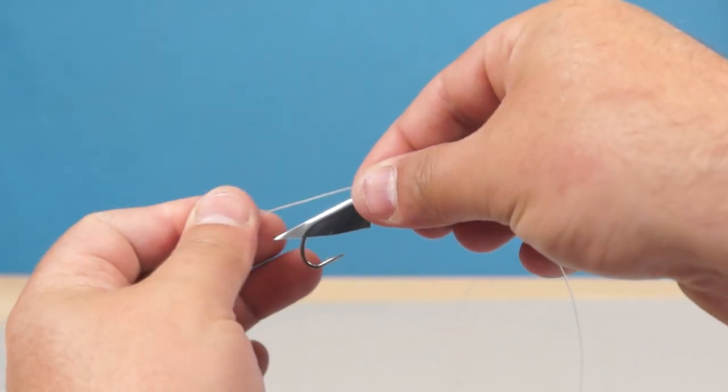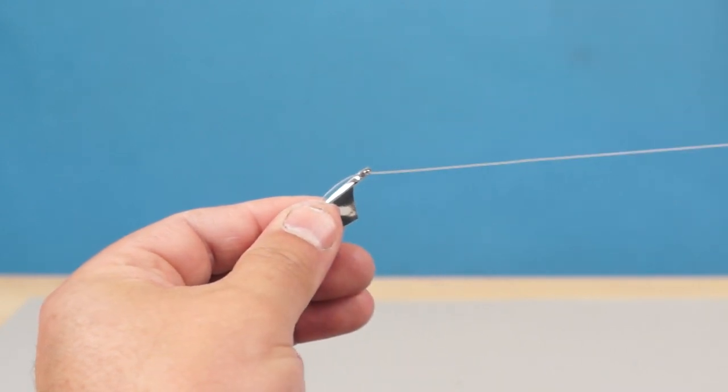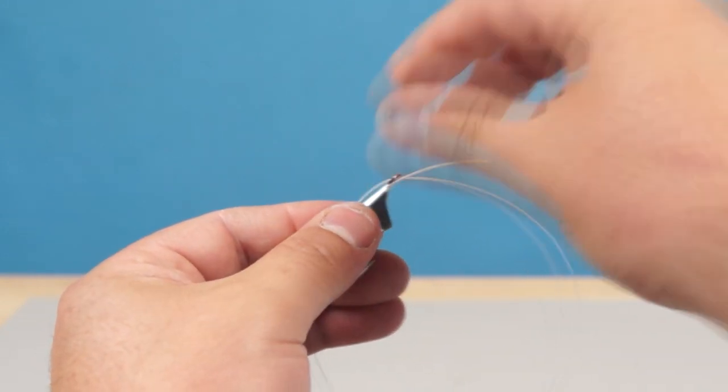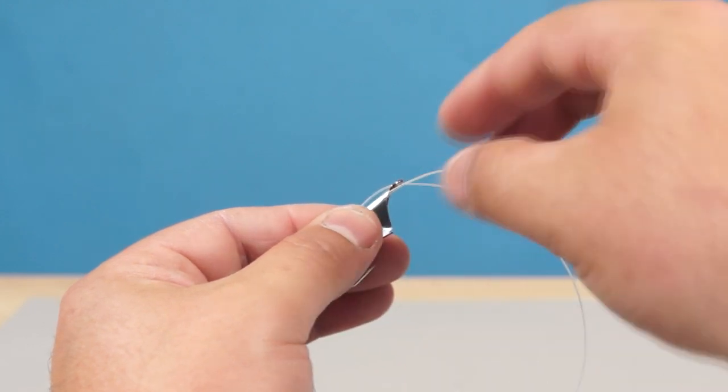Then feed it through a little past the bend of the hook. The other end can then be brought round to form a loop and positioned on top of the hook shaft.